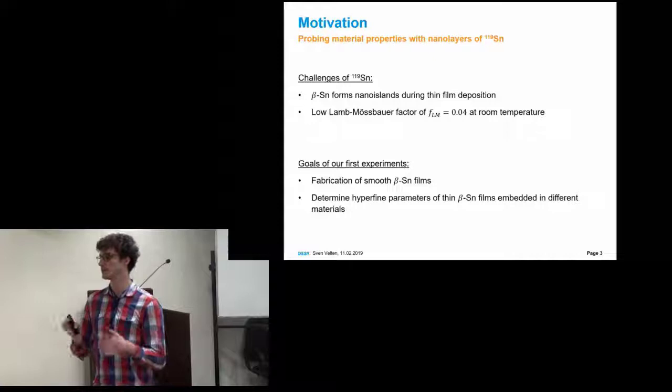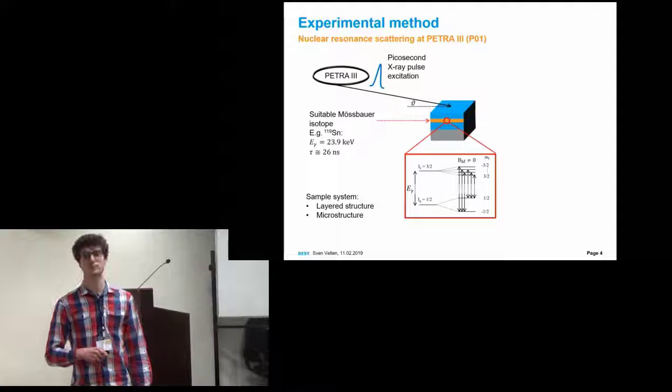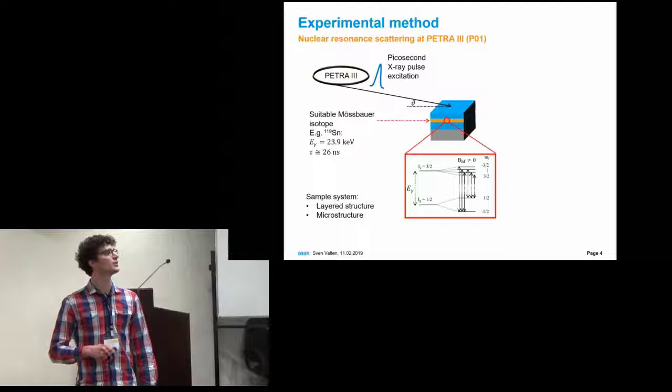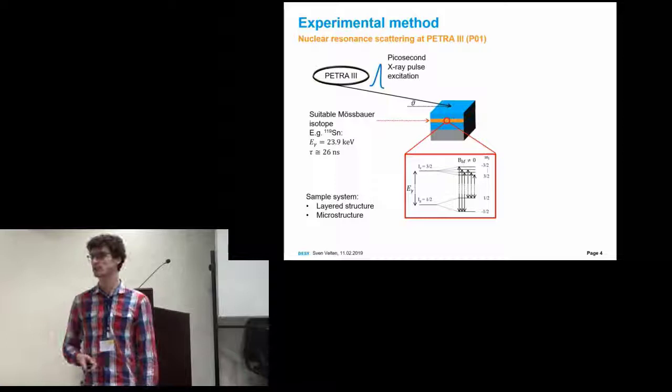I will briefly explain the experimental method here, nuclear resonance scattering. We did this at Petra 3 at the P01 beamline. We hit our sample with a picosecond x-ray pulse from the synchrotron under an incidence angle of theta. The sample system looks typically like this. We have some layered structure, and also have a microstructure where we focus our beam on it.